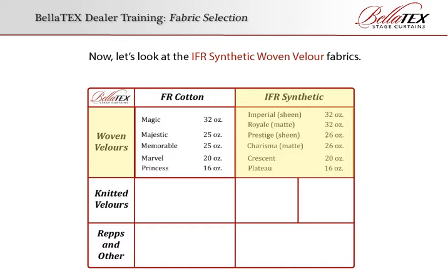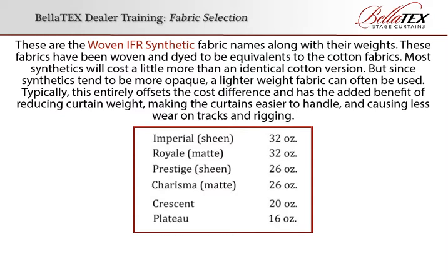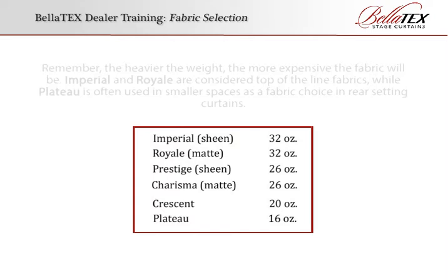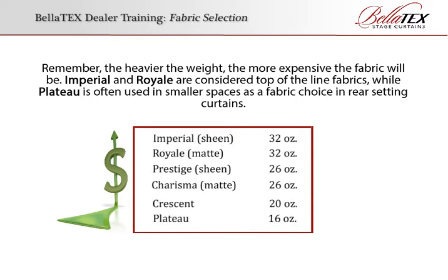Now let's look at the IFR synthetic woven velour fabrics. These fabrics have been woven and dyed to be equivalents to the cotton fabrics. Most synthetics will cost a little more than an identical cotton version, but since synthetics tend to be more opaque, a lighter weight fabric can often be used. Typically this entirely offsets the cost difference and has the added benefit of reducing curtain weight, making curtains easier to handle and causing less wear on tracks and rigging. Imperial and Royal are considered top-of-the-line fabrics, while Plateau is often used in smaller spaces as a fabric choice in rear setting curtains.